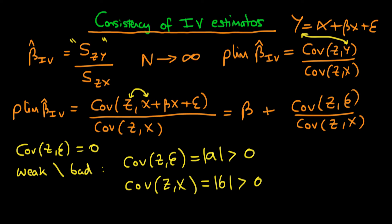Then you can see that we could rewrite our probability limit of our IV estimator as being equal to beta plus A divided by B. And you can see here that if our instrument is sufficiently weak, in other words,